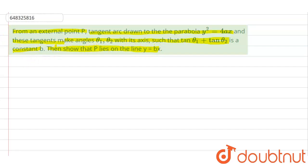So what we have been given is tan θ₁ + tan θ₂ = b. Let's call it equation 1. Now the given parabola is y² = 4ax.